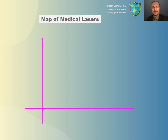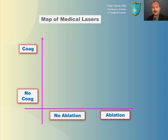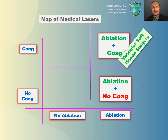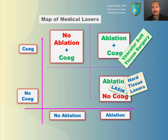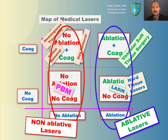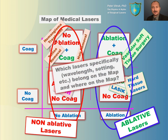We recognize that there are lasers out there that do not cut and do not coagulate. Here is a simple map of all lasers from the perspective of their ability to ablate and coagulate. Top right corner: ablation and coagulation — perfect for vascular soft tissue surgery. No ablation but with good coagulative properties — perfect for those applications. Photobiomodulation lasers do not inflict much thermal effect. Ablative lasers are on the right, non-ablative on the left.